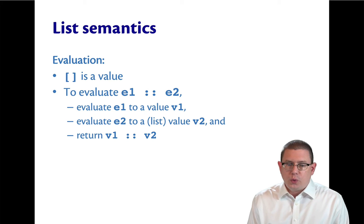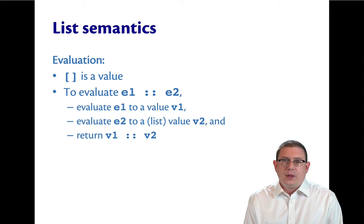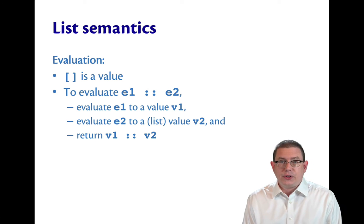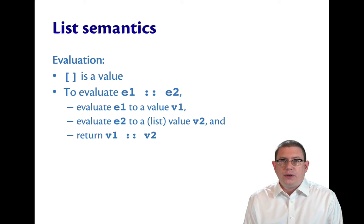The evaluation rules for lists are quite simple. The empty list is already a value. To evaluate cons, you just evaluate the expressions on either side of the cons operator. So evaluate E1 to a value V1, evaluate E2 to a value V2.